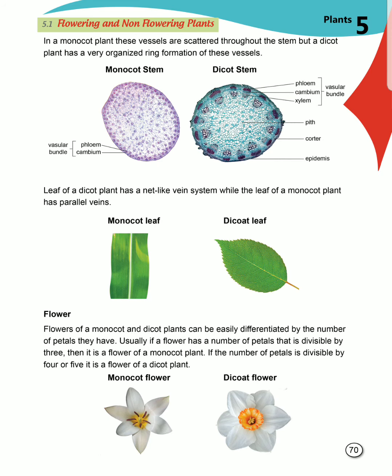Coming on to flower: how can a monocot flower and a dicot flower be different? If the number of petals can be divided by 3, then these are monocot flowers. But if the number of petals can be divided by 4 or 5, they are said to be dicot plants.